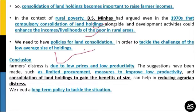In conclusion, farmer distress is due to low prices and low productivity. Suggestions include limited procurement measures to improve productivity and consolidation of land holdings to gain benefits of scale, which can help reduce agrarian distress. We need a long-term policy to tackle this situation and move away from the current challenges to help with farmer distress.